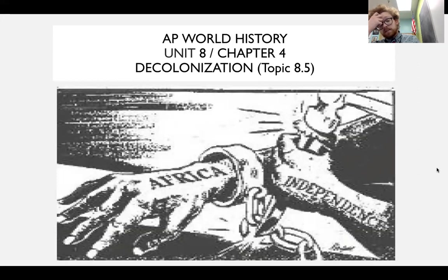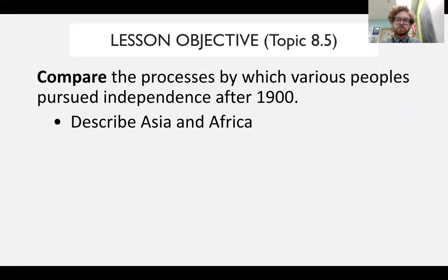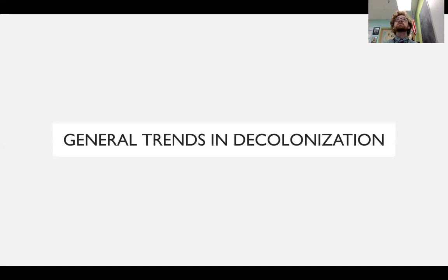Today we're going to take a look at decolonization — the end of new imperialism and its replacement by a different form of colonialism, which we'll discuss towards the end. We're going to focus on how decolonization will occur, some specific examples, and general trends following decolonization. The lesson objective is to compare the processes by which various peoples pursued independence after 1900, describing Asia and Africa.